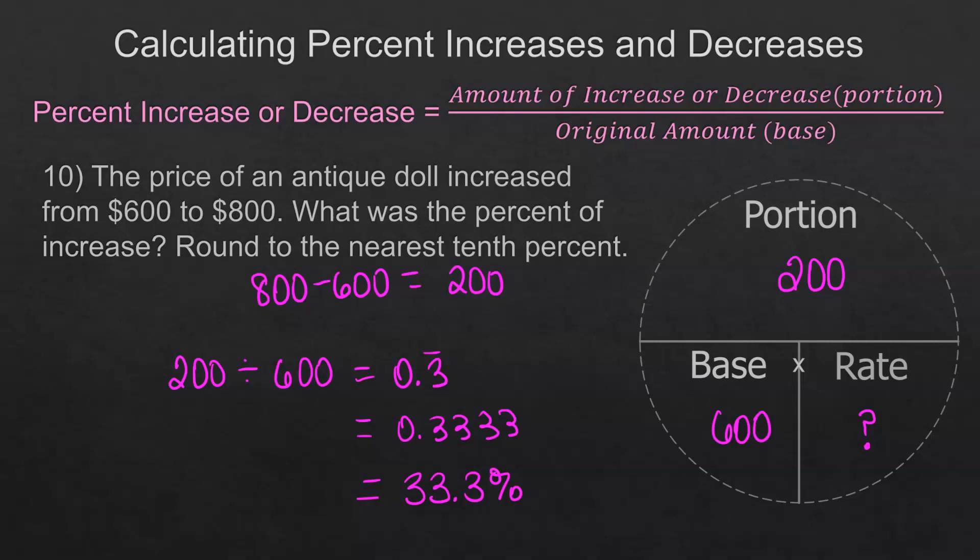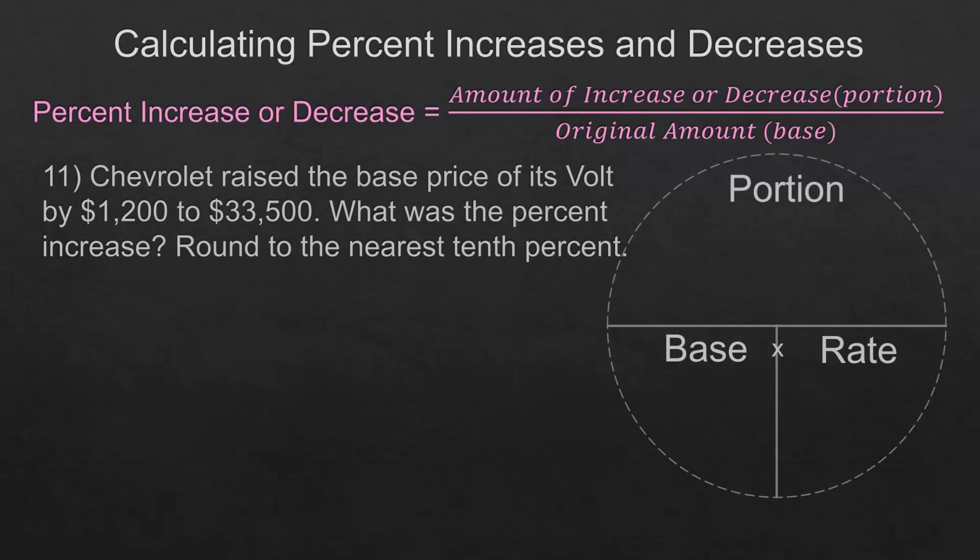One last question. Chevrolet raised the base price of its Volt by $1,200. So that's our portion. And because they raised it to $33,500, we have to subtract and see what it was before to find our base number. And that's $32,300. So our original, because it was an increase, our original was $32,300. We're always looking for the rate when we're looking for the percent of increase or decrease.